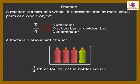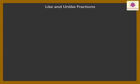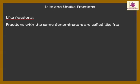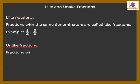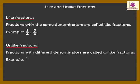When 2 or more fractions are given, depending on the value of their denominators, they can be termed as like or unlike fractions. Fractions with the same denominators are called like fractions. For example, 1 upon 4, 3 upon 4, etc. Unlike fractions have different denominators. For example, 5 upon 8, 5 upon 3, 2 upon 7, etc.